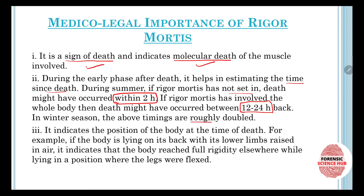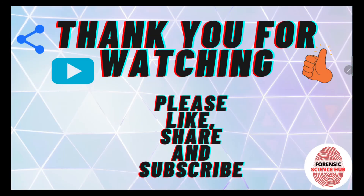In winter, the timings are roughly doubled: if rigor mortis has not set in, death may have occurred within four hours; if it has developed in the whole body, death may have occurred 24 to 48 hours ago. Rigor mortis also indicates the position of the body at the time of death — for example, if the body is lying on its back with lower limbs raised in the air, it indicates the body reached full rigidity while lying in a position where the legs were flexed.